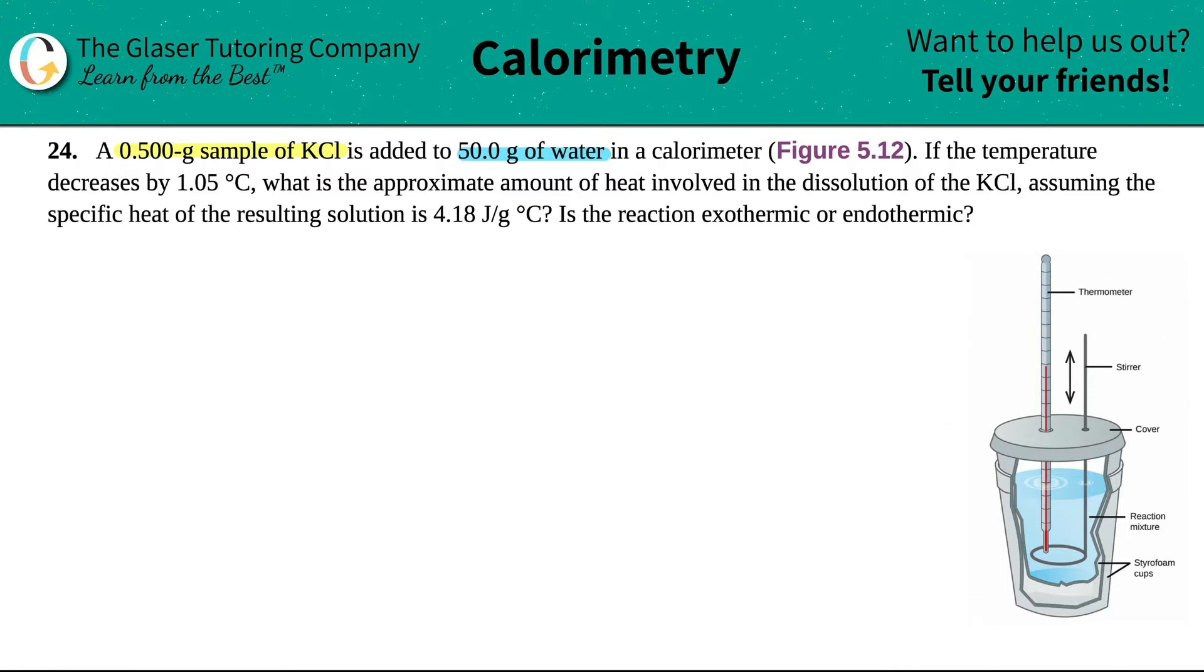And now they're saying, if the temperature decreases by 1.05 degrees Celsius, what is the approximate amount of heat involved in the dissolution of KCl, assuming that the specific heat of the resulting solution is 4.18 joules per gram degrees Celsius. And then they ask, is this reaction exothermic or endothermic?